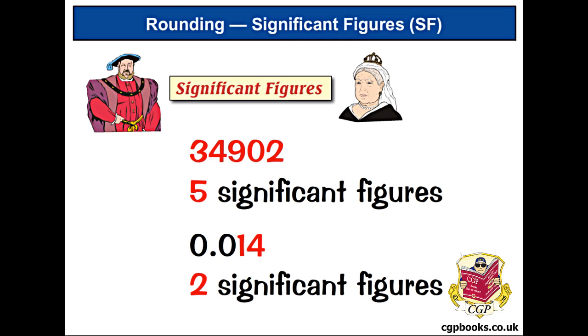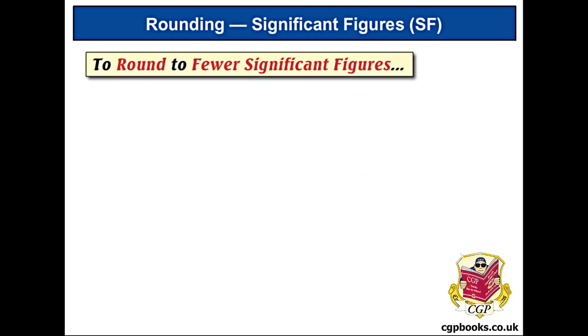This is important because you need to know how to round numbers to fewer significant figures. The basic method is exactly the same as the method for rounding to fewer decimal places, but there's also an extra rule that you sometimes need.